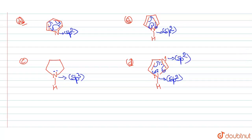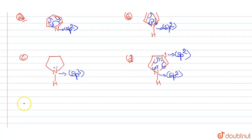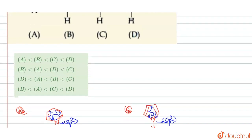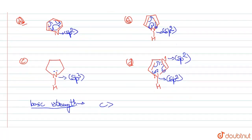Now, for the increasing order of basic strength: the sp3 hybridized nitrogen is most basic because sp3 nitrogen has lower electronegativity than sp2, meaning less tendency to attract the electron pair and more tendency to donate it. Therefore, C is the most basic compound.